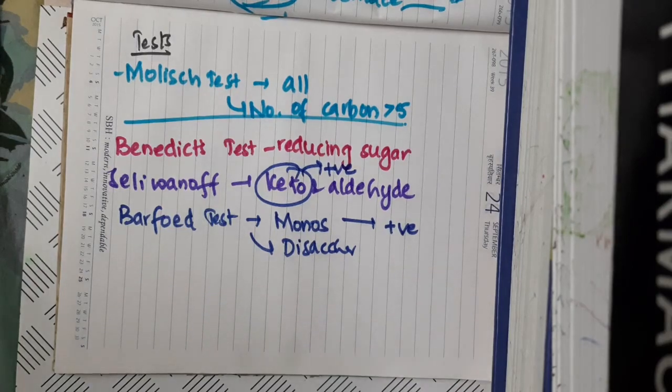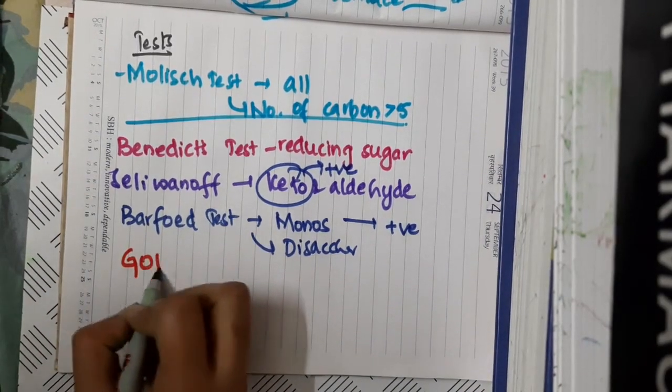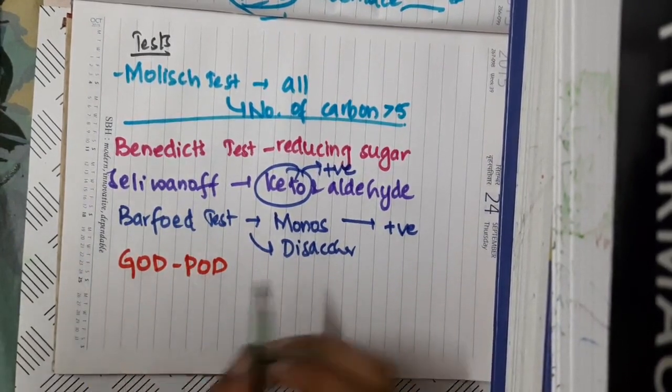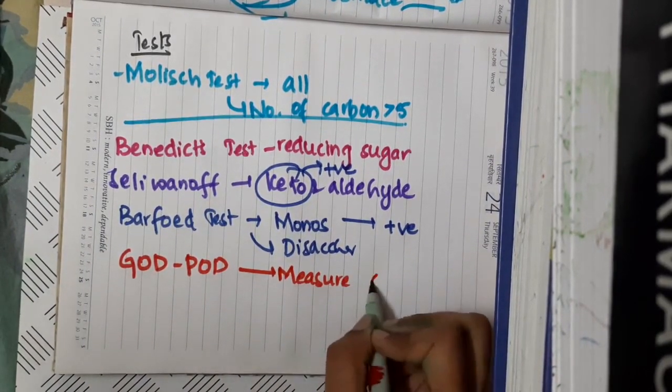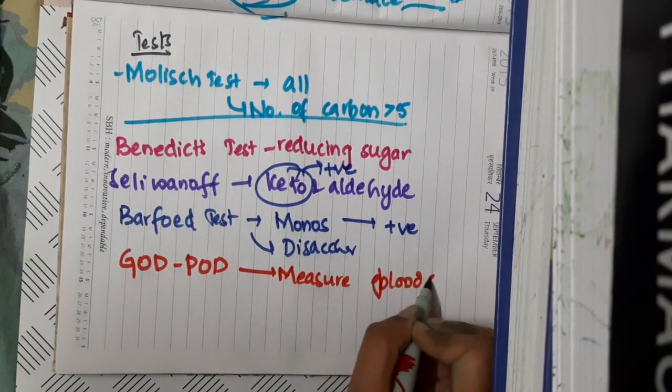Then you have glucose oxidase and peroxidase test. This glucose oxidase and peroxidase test will measure the amount of blood glucose.